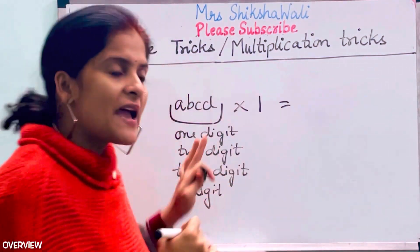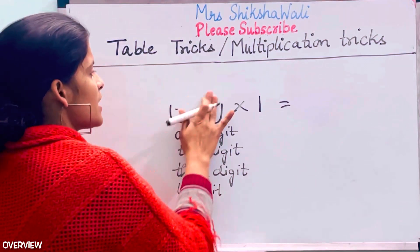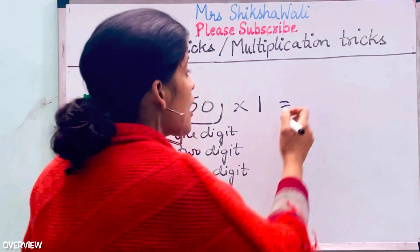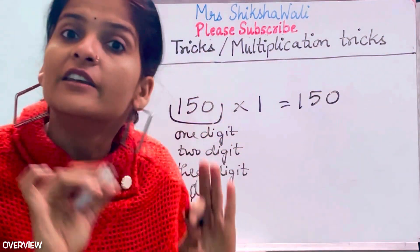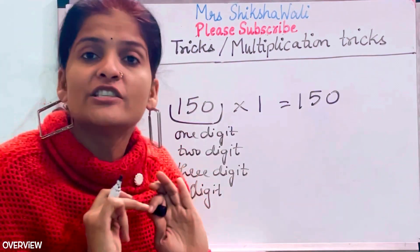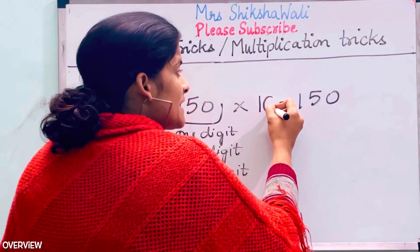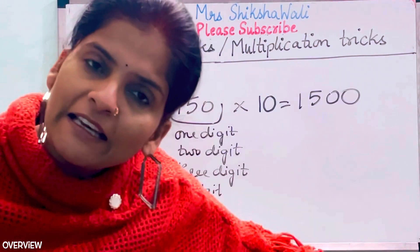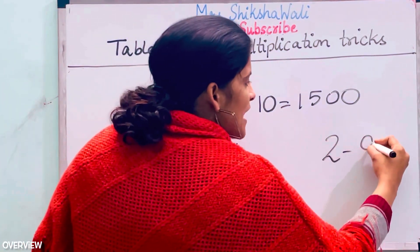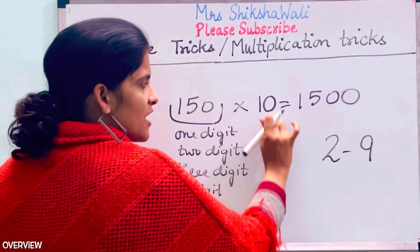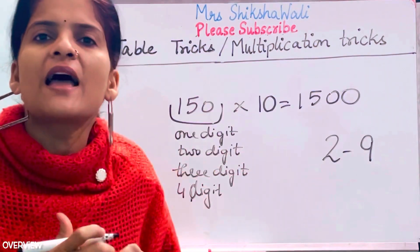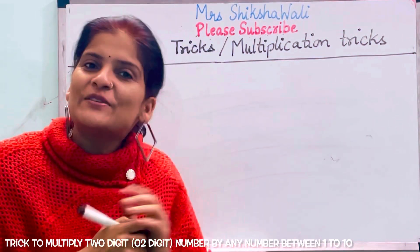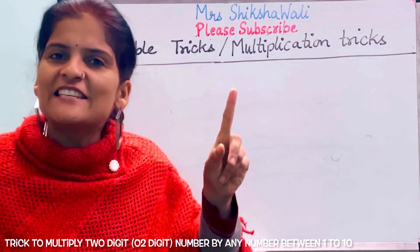If you multiply any number by 1, the number itself comes — for example, 150 × 1 = 150. If you multiply by 10, you just add a zero. So 1 and 10 are clear. Now I will take you from 2 to 9 — if the number is in this place, how will we multiply? I will tell you a trick.